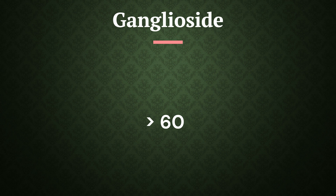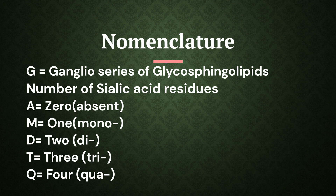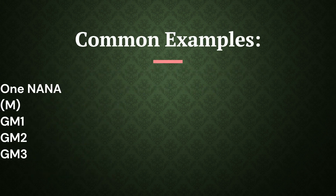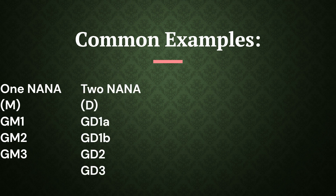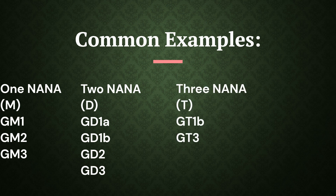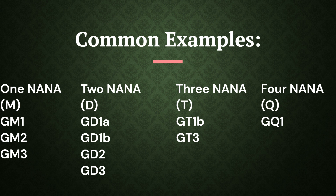Now let's learn how gangliosides are named. The 'G' at the beginning of each ganglioside name indicates belonging to the ganglia series of glycosphingolipids. M, D, T, and Q indicate presence of 1, 2, 3, and 4 sialic acid residues respectively — M for mono, D for di, T for tri, and Q for quadruple. Examples: gangliosides with 1 NeuNAc are GM1, GM2, GM3; with 2 NeuNAc are GD1a, GD1b, GD2, GD3; with 3 NeuNAc are GT1b, GT3; and with 4 NeuNAc is GQ1b.